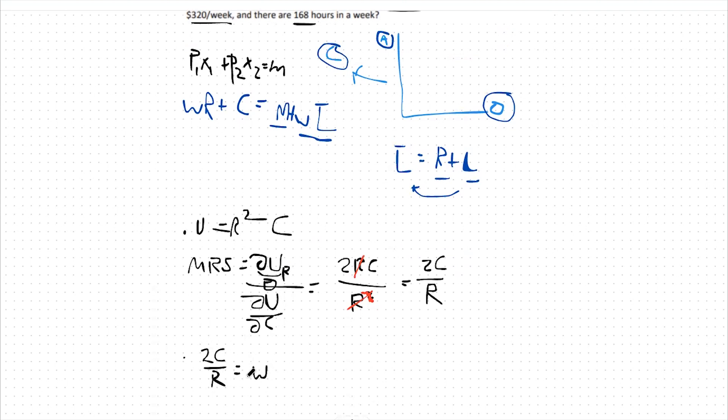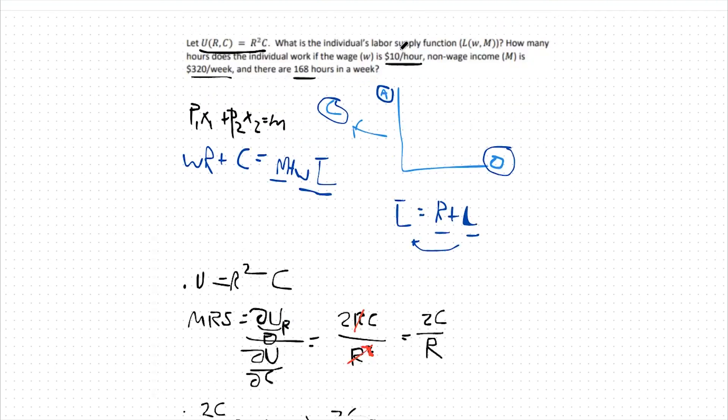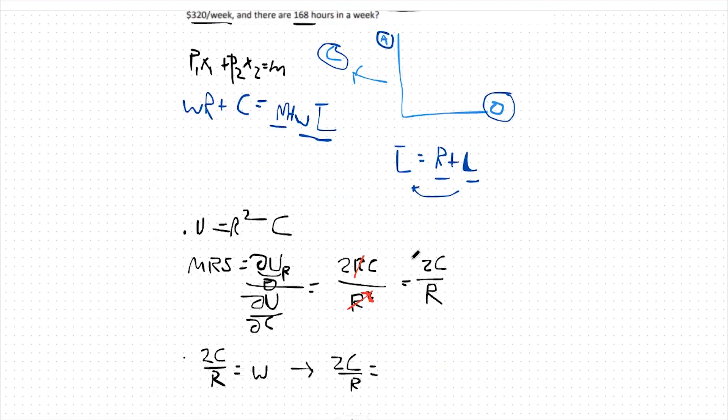Going further we know our wage rate is $10 per hour in this question. So we can say 2C over R equals 10. 2C equals 10R. So C is equal to 5R.